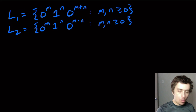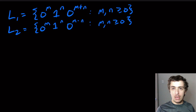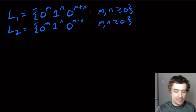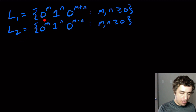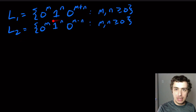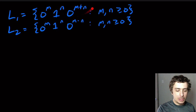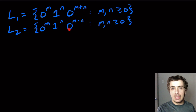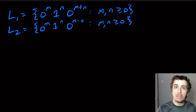The next two proofs I want to do all in one fell swoop because they're very similar to each other, so we can do both in the same proof with a slight change at the very end. We have two languages: zeros and ones of the form some number of zeros, some number of ones. In the first case the number of zeros at the end equals the number of zeros at the beginning plus the number of ones, and the second is the product of the number of zeros and ones.